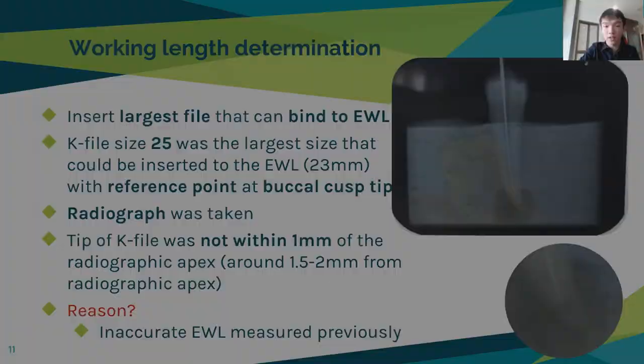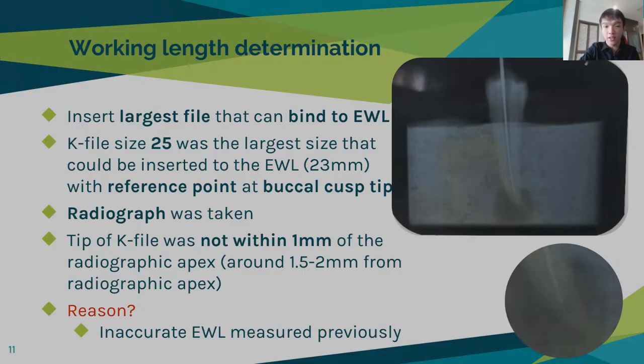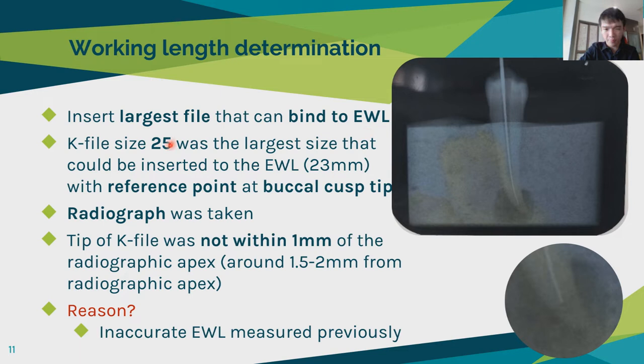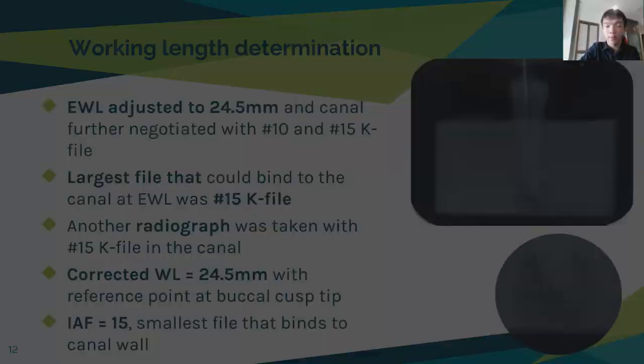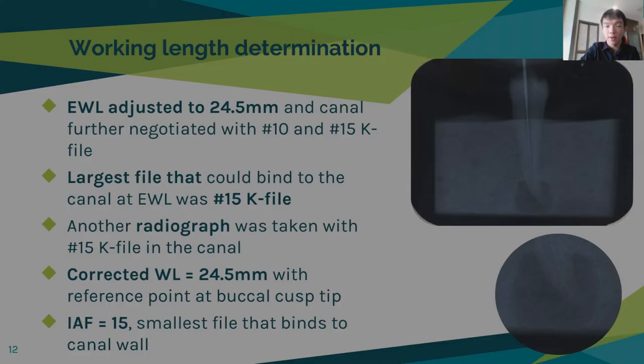For working length determination, the largest file that could bind to the estimated working length was size 25. The radiograph was taken; however, it was not within 1 mm of the radiographic apex — it was around 1.5 to 2 mm. So I added 1.5 mm to the previous estimated working length, making the new estimated working length 24.5 mm.